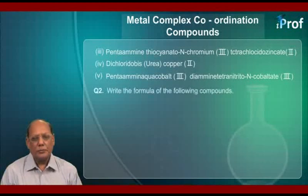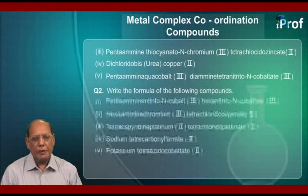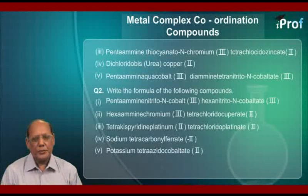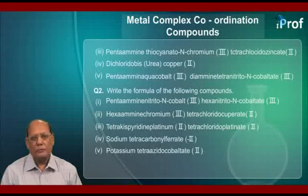Question number two: write the formula of the following compounds. The first name given is: pentachlorido nitrito-N cobalt(III), hexanitrito-N cobaltate(III).